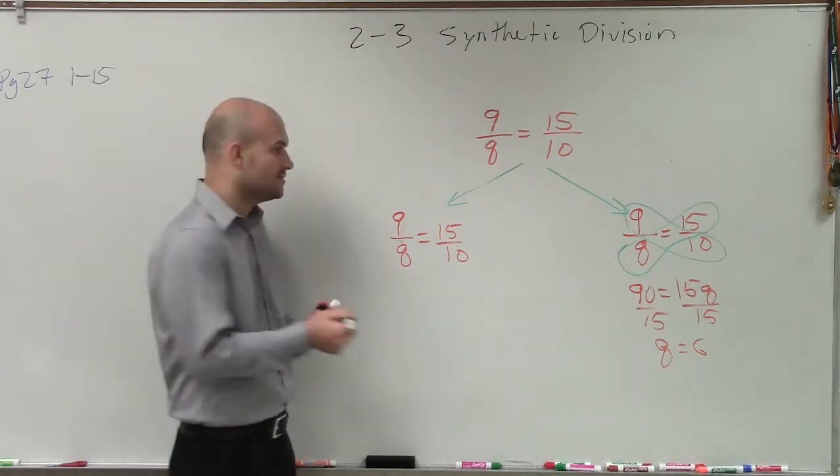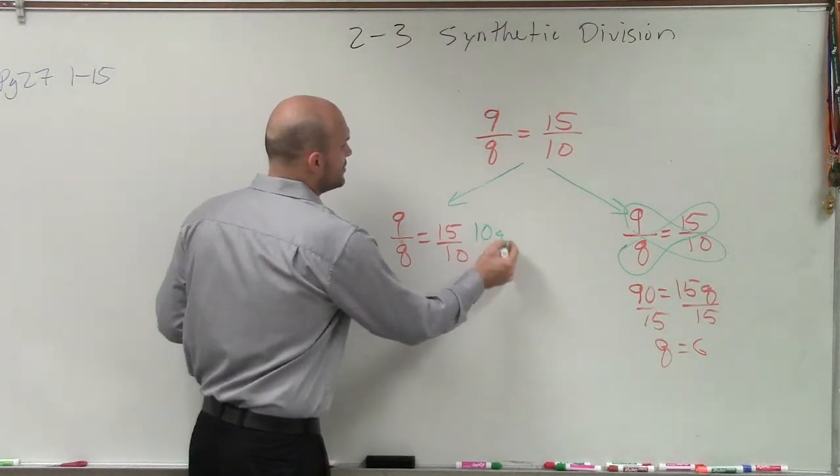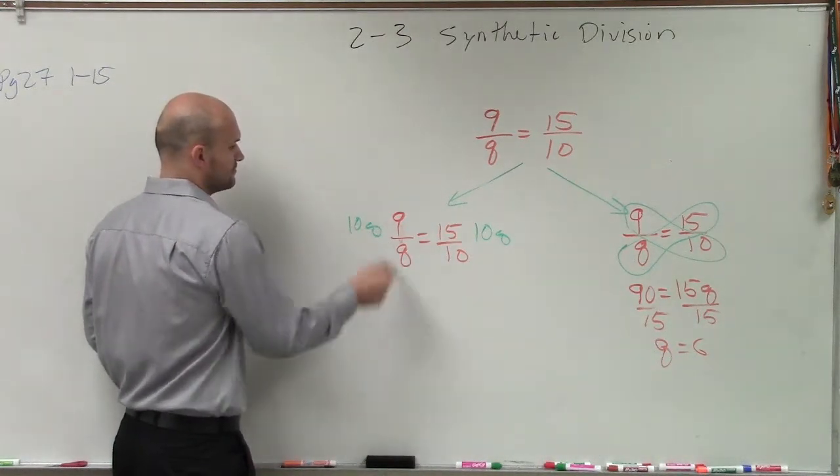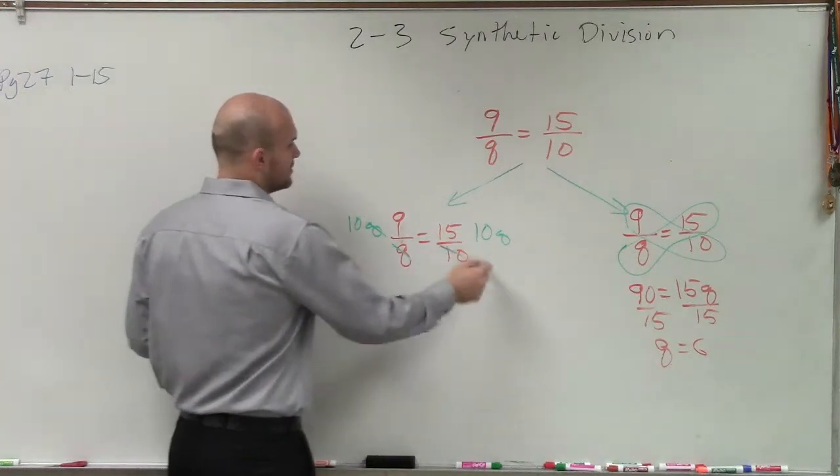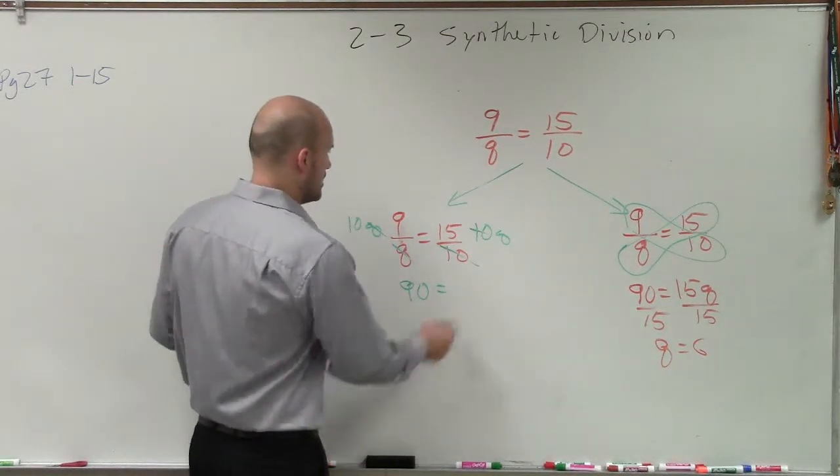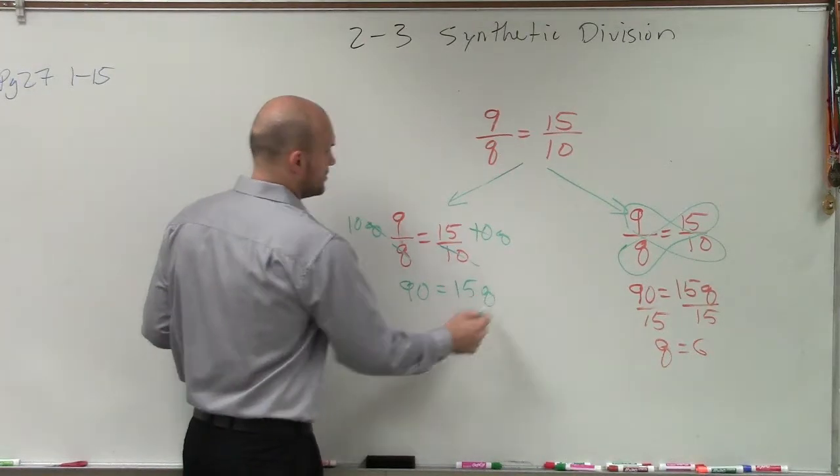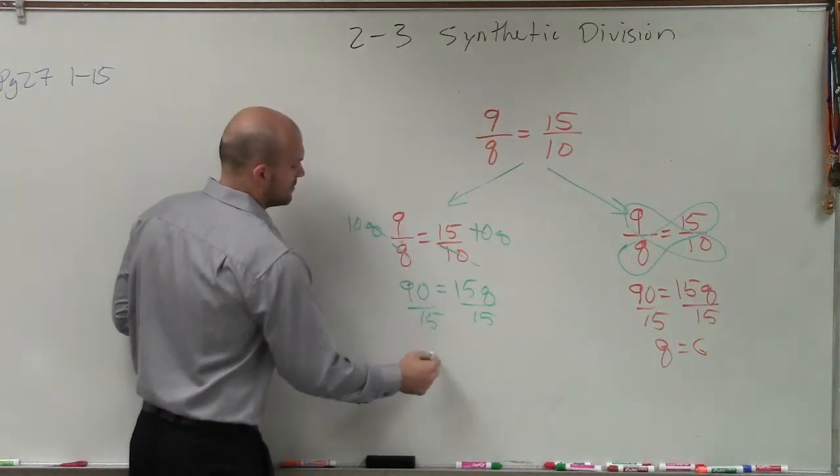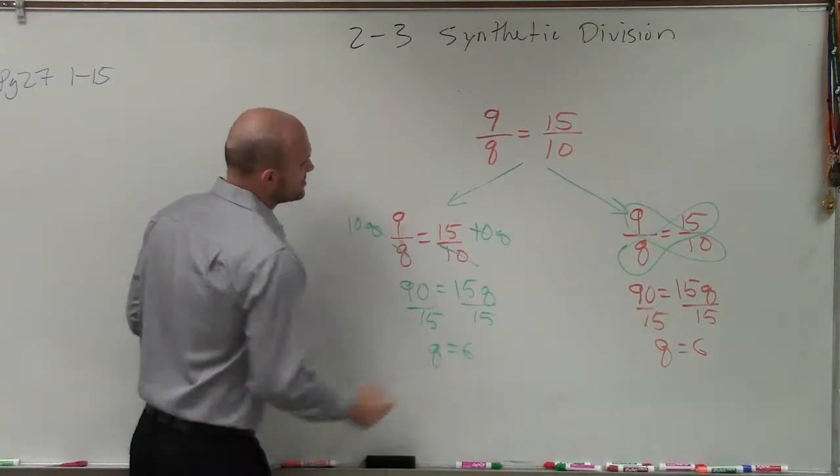So if you multiply by 10q on both sides, the q is eliminated, the 10 is eliminated, and you're left with 90 equals 15q. Then divide by 15, q equals 6. All right.